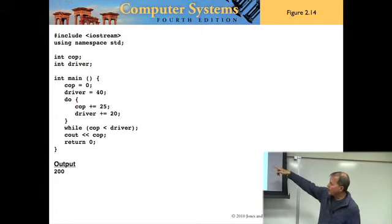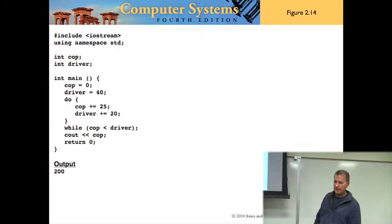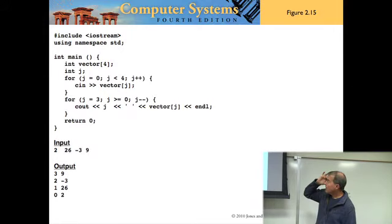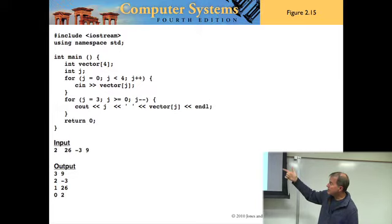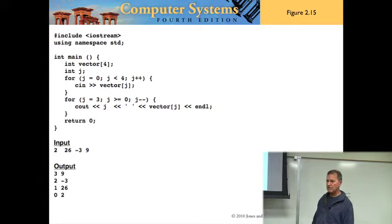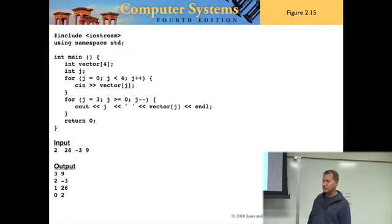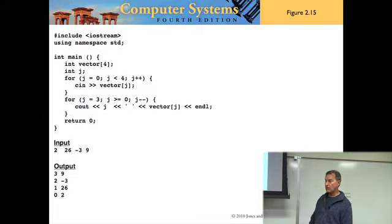Where would cop and driver be stored in this program? They are global, so in a fixed location. Next: a for loop. What is int vector[4]? That's an array with four cells — vector sub zero, one, two, three. Where are those four cells stored? On the runtime stack, because vector is a local variable.